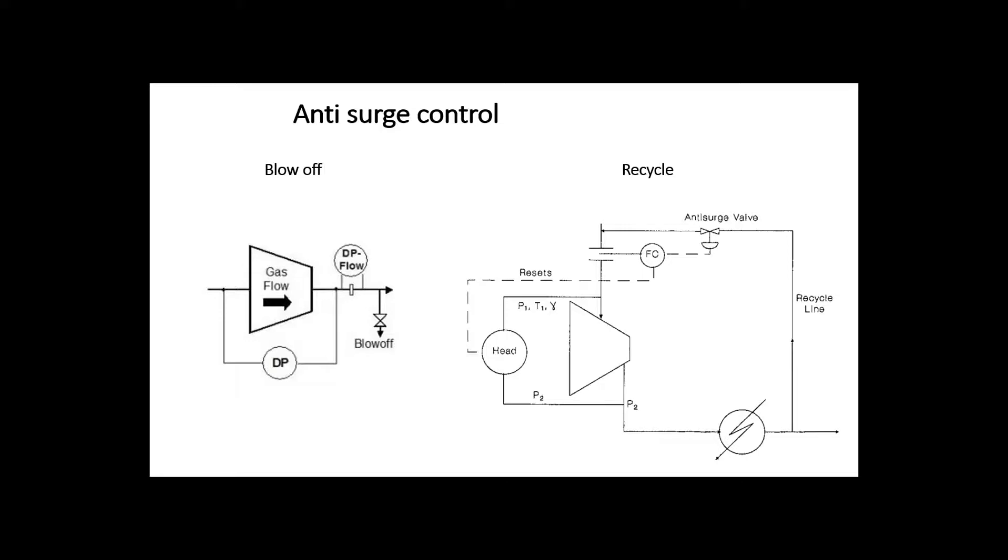But as blowing off is wasting expensive process fluid, mostly recycling is preferred and carried out through a recycle line, also called anti-surge line, with an installed anti-surge control valve on it.